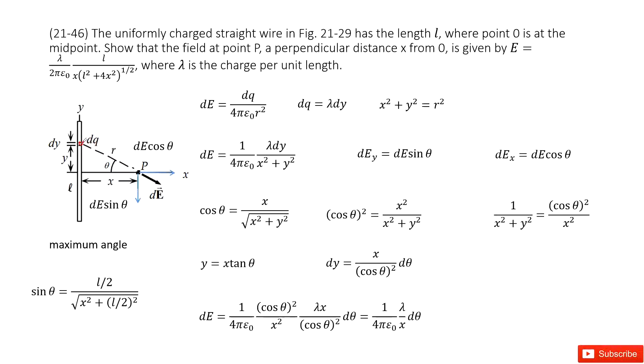Now can you find the electric field density by this small fraction? Yes, this is dE. And the magnitude for this dE is dq over 4 pi epsilon 0 r squared. r is distance for this small fraction with this position P.